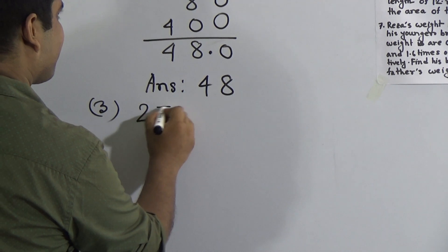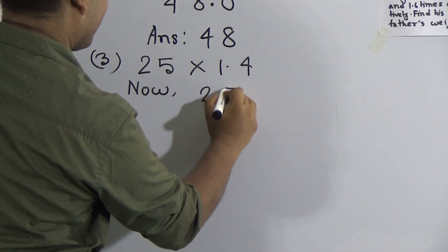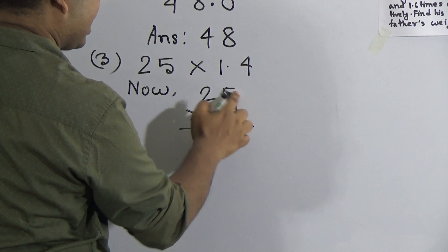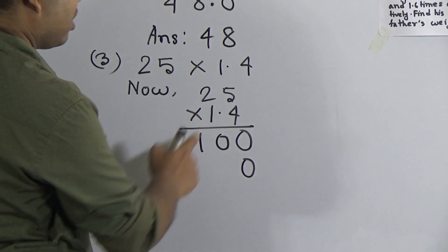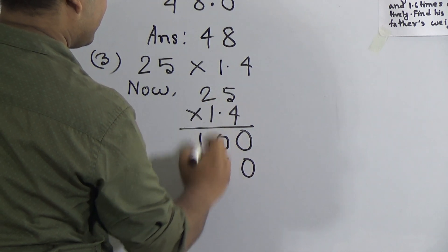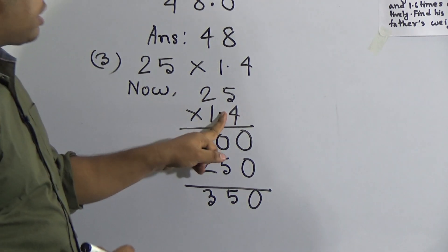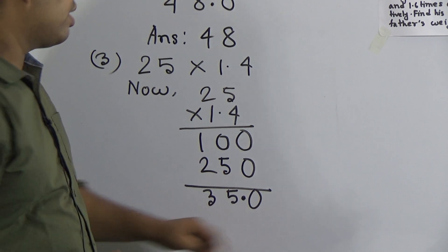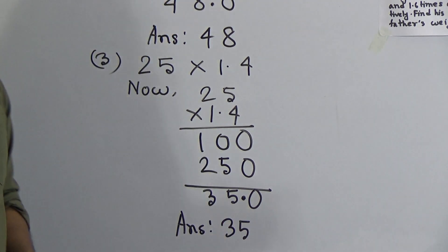Next, we shall solve question number 3, which is 25 multiplied by 1.4. Similar to question number 1: 25 multiplied by 1.4. So first we multiply 25 by 4: 5 × 4 = 20 carrying 2, 2 × 4 + 2 = 10. Once place done, here we place 0. 5 × 1 = 5 and 2 × 1 = 2. Now we do addition: 0, 5 and 3. After point, how many digits? 1 digit. After point there is only 1 digit which is 0 and that is negligible. So the answer is 35.